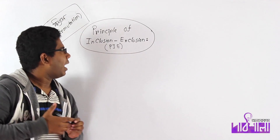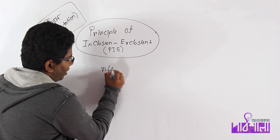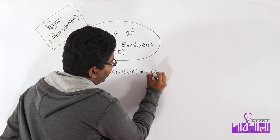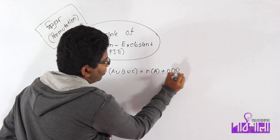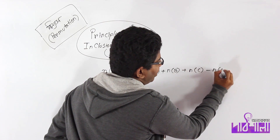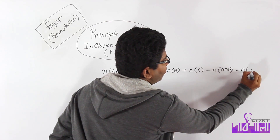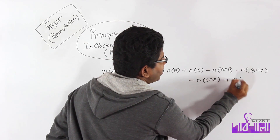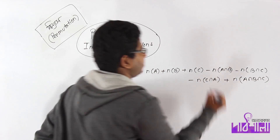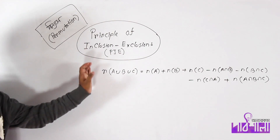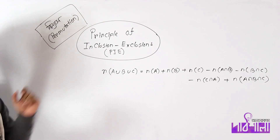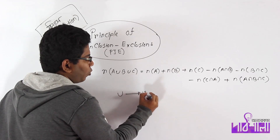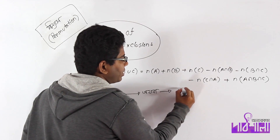Where did we go? Now we are going to be able to explain. A union B union C: N of A plus N of B plus N of C minus N of A intersection B minus N of B intersection C minus N of C intersection A plus N of A intersection B intersection C. This is the principle of inclusion-exclusion.